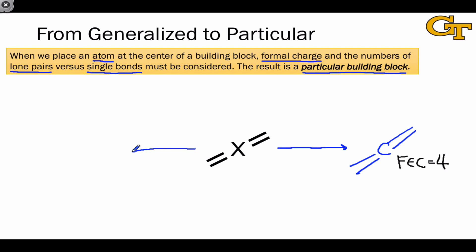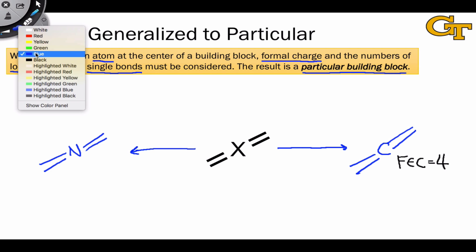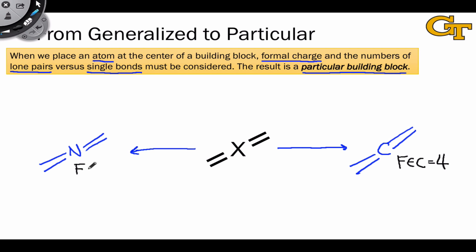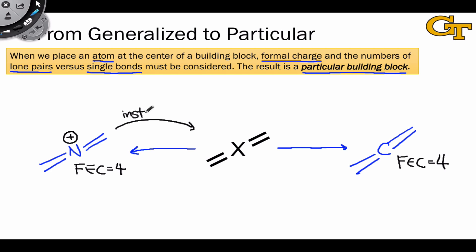For example, if we add a nitrogen atom to the center rather than carbon, we still have the nitrogen flanked by two double bonds, and the formal electron count is still 4 — showing how each of these is an instance of a broader structural pattern. But since the neutral nitrogen atom has 5 valence electrons, we're dealing with a formal charge of plus 1 on this structure.